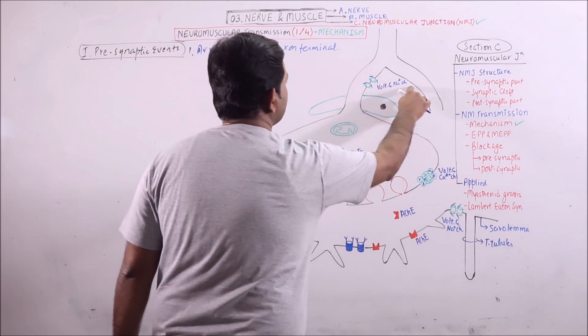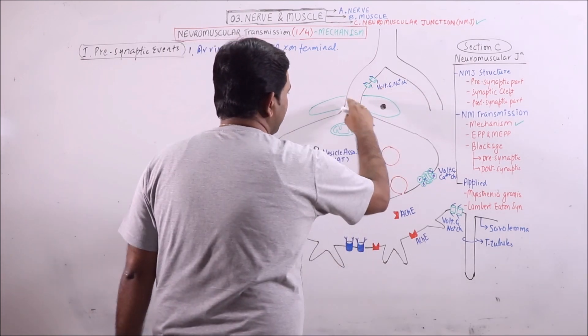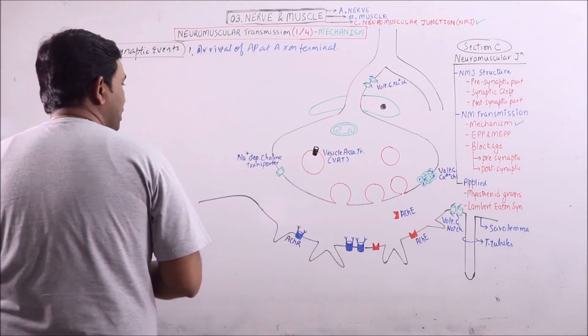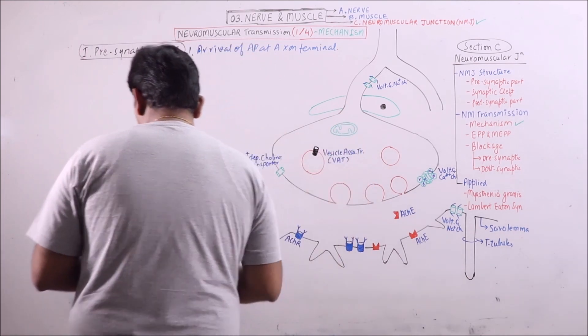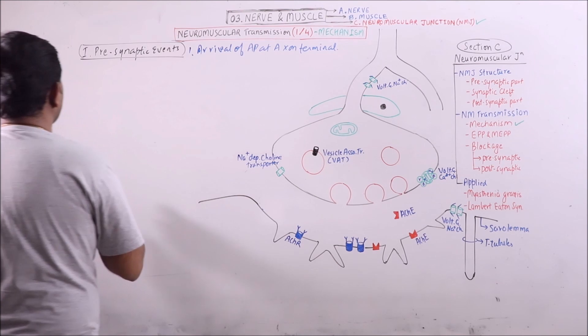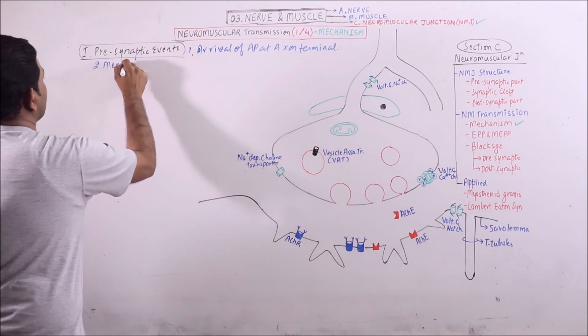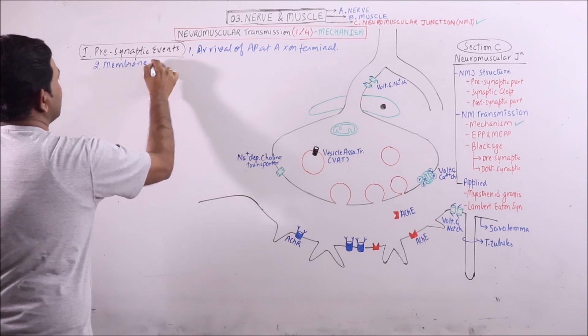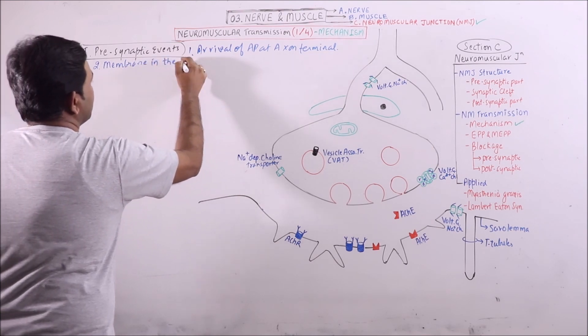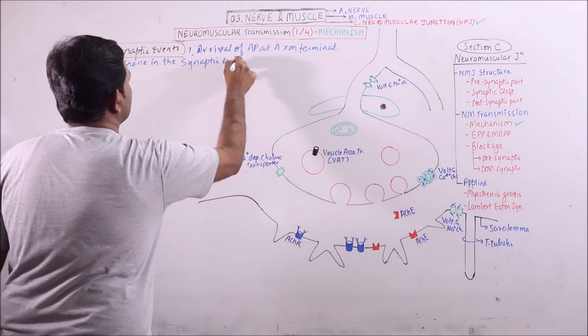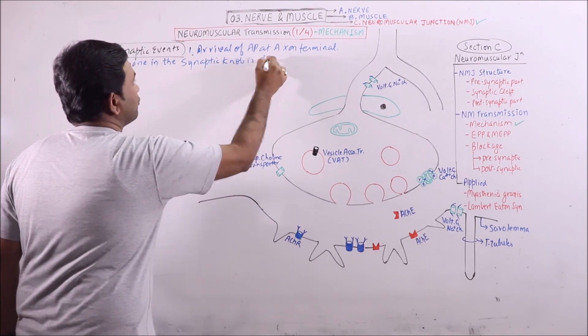We know that voltage gated sodium channels are involved in this and when this action potential arrives at the axon terminal, the membrane in the synaptic knob is depolarized.